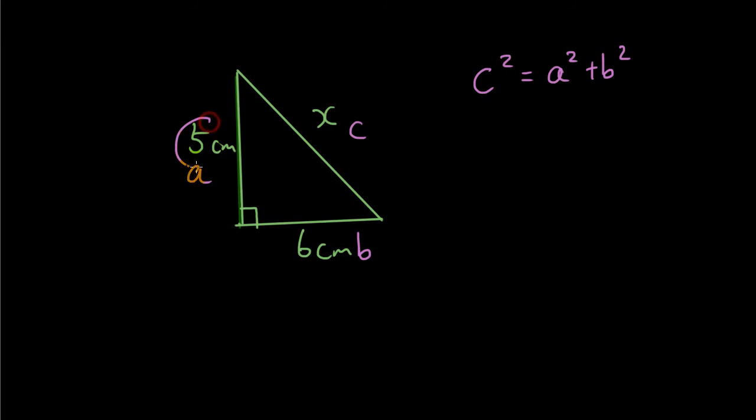Now you can substitute the numbers in. So we got five is a and six is b. So five squared plus six squared. Probably should have chosen a different number to six because that looks like a b. But this is actually six. So I have c squared equals five squared plus six squared.